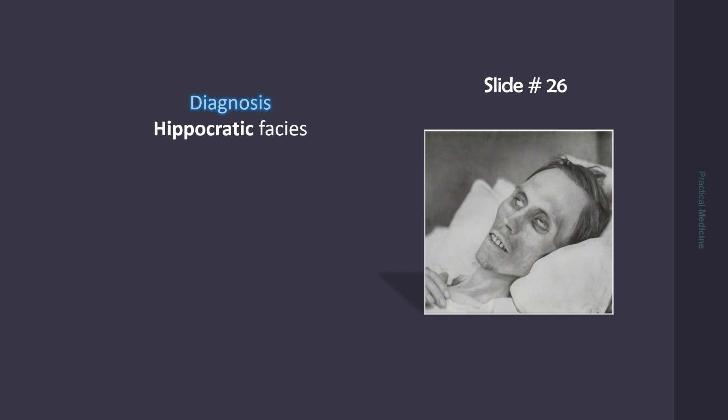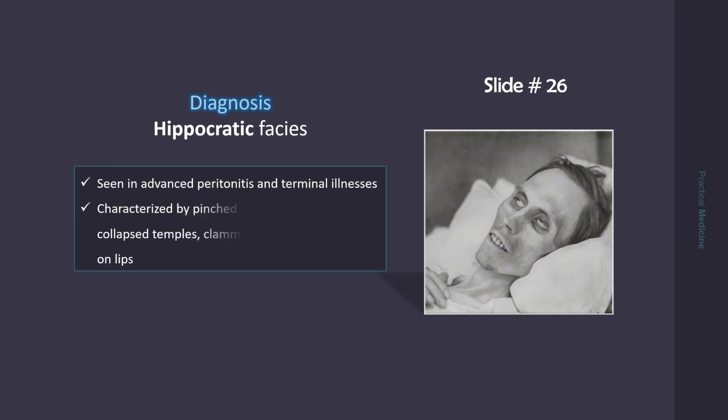This appearance is known as Hippocratic facies. It is seen in advanced peritonitis and terminal illnesses. It is characterized by pinched nose, sunken eyes, collapsed temples, clammy forehead, and crusting on lips.